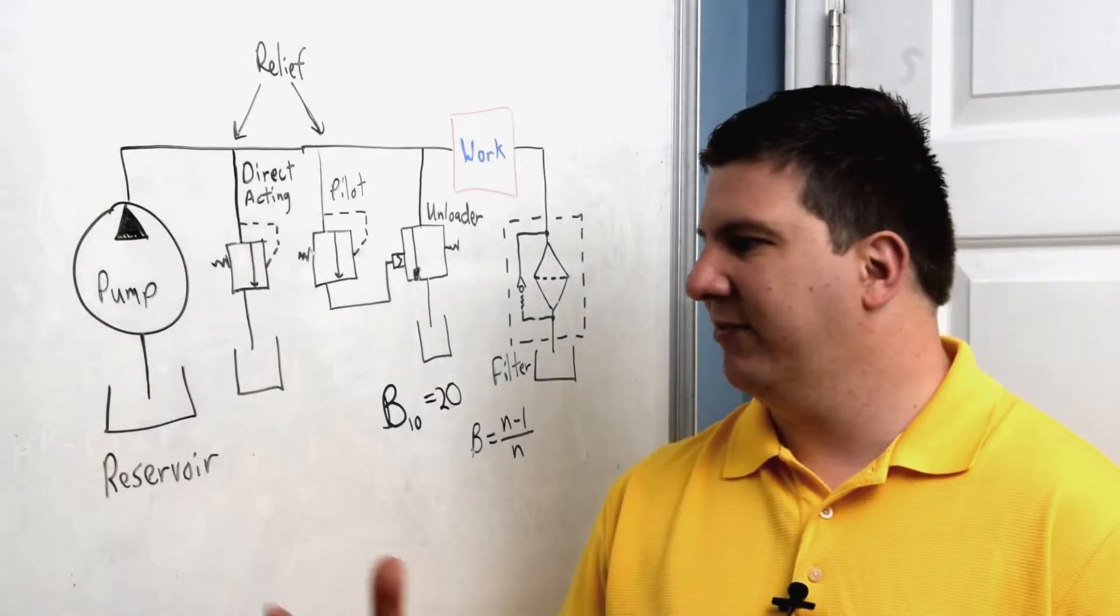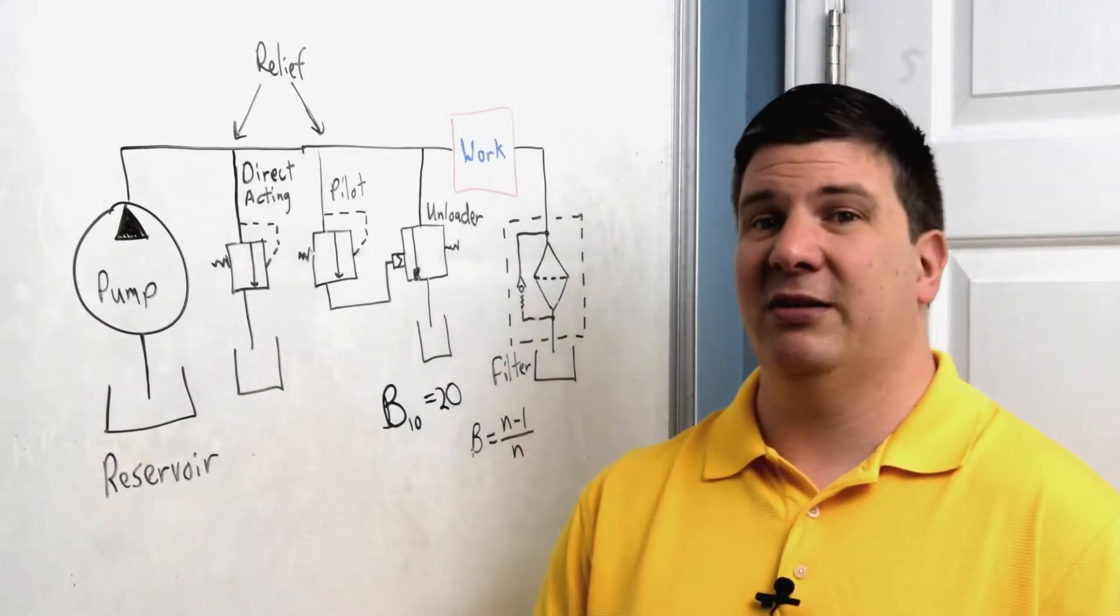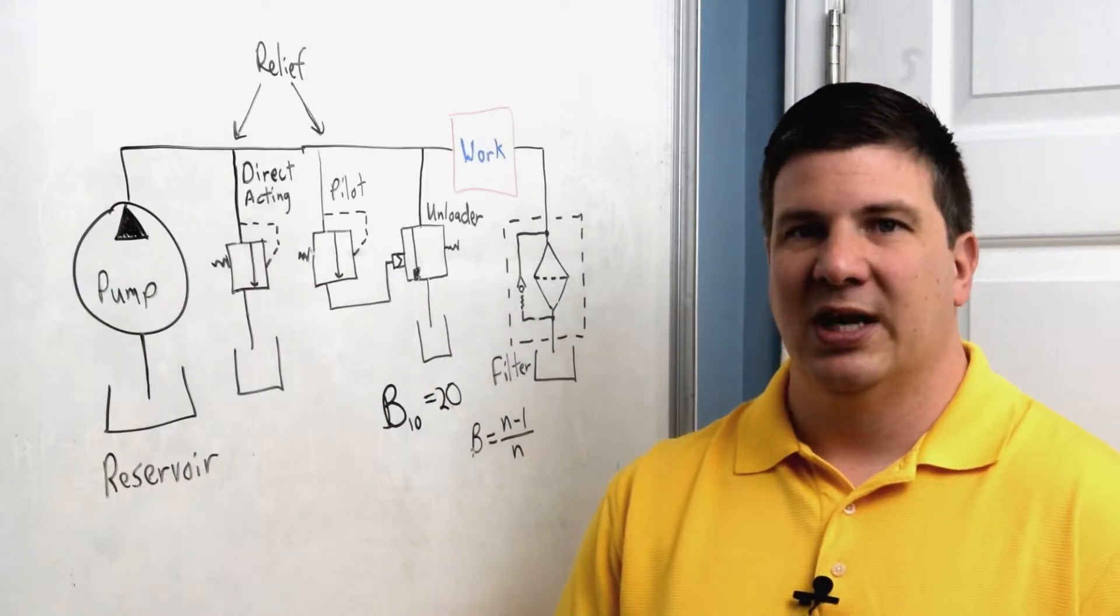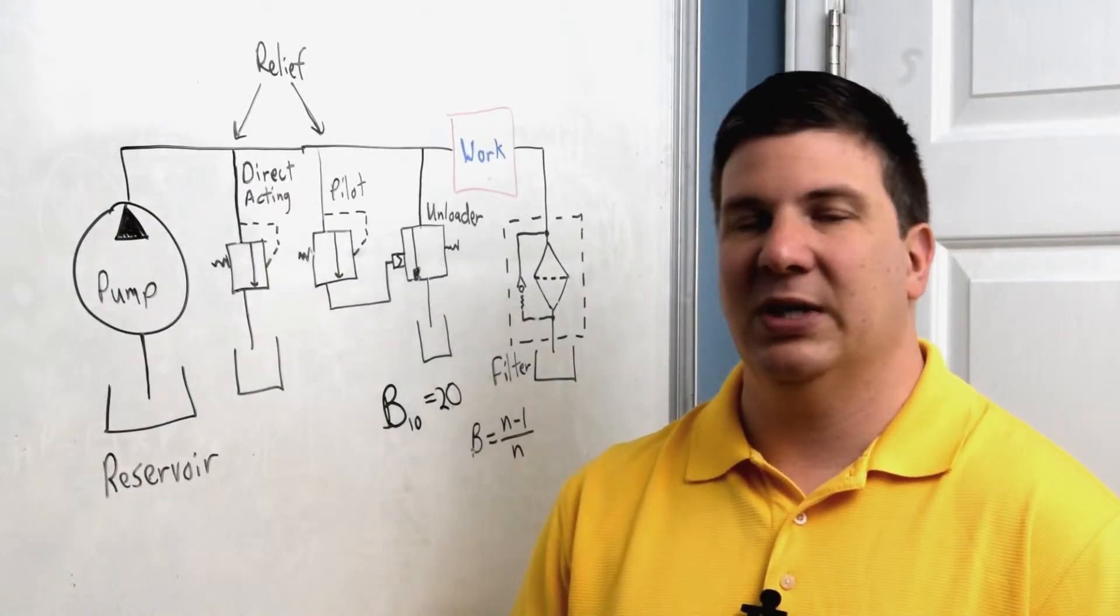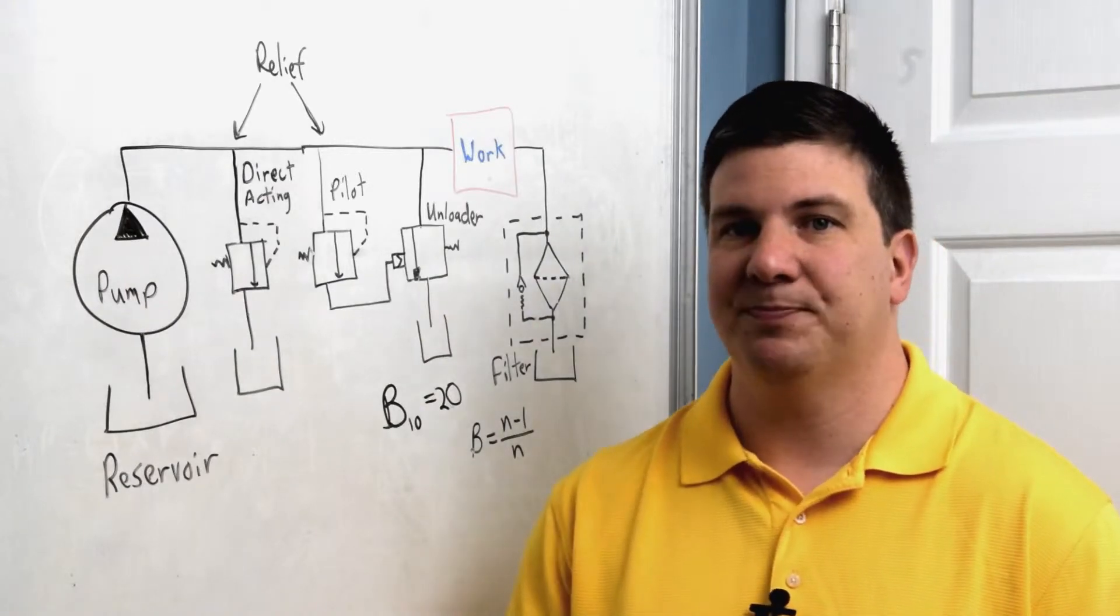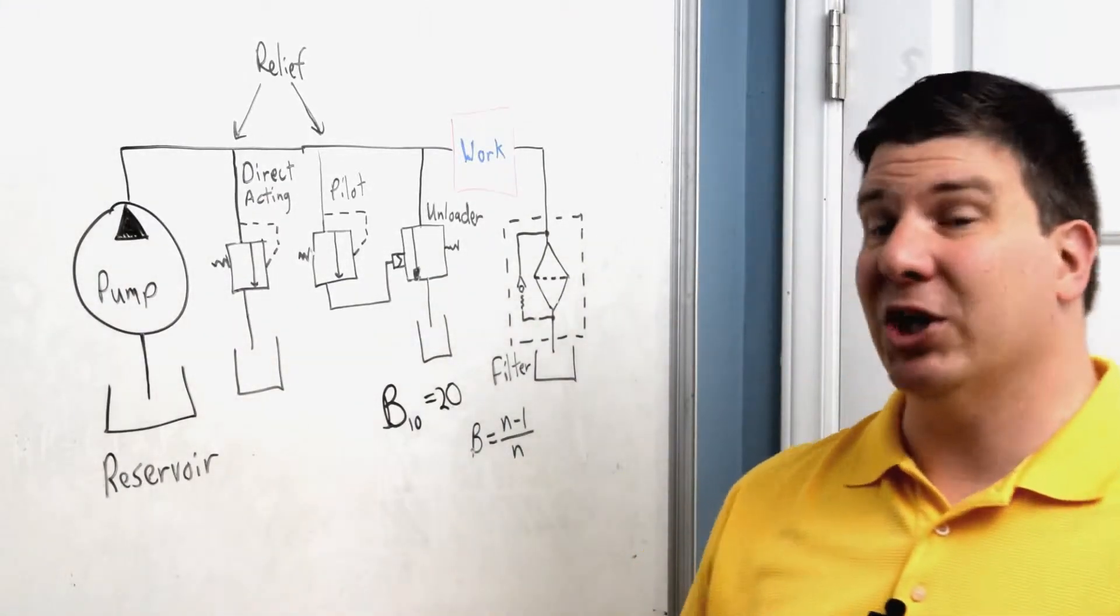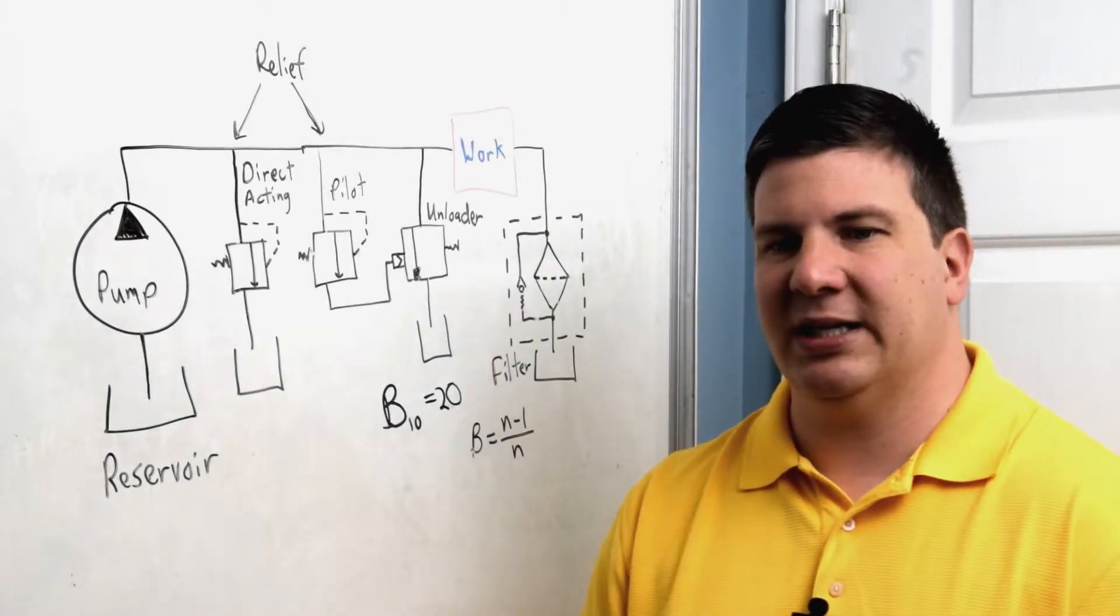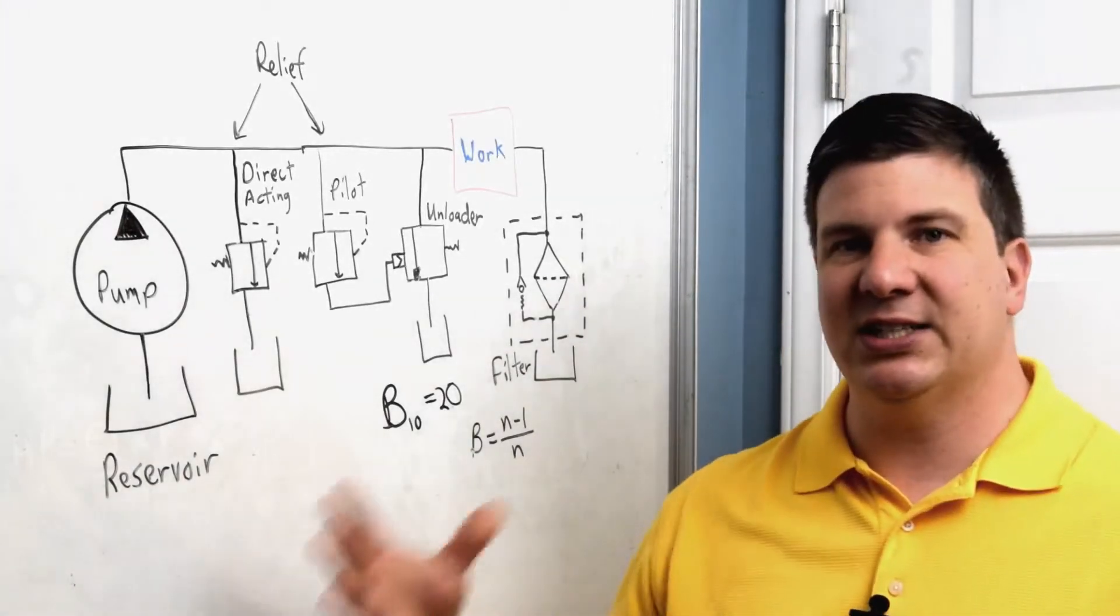So I'm going to need a much bigger tank for that. In that case, if I have a 10 gallon flow rate but I need 45 gallons of oil, I probably should be looking at about an 80 gallon tank for this application, if not bigger. That covers the size of a reservoir.